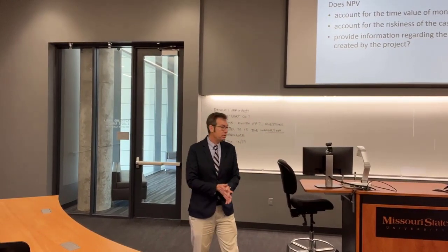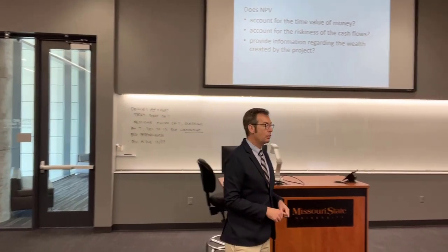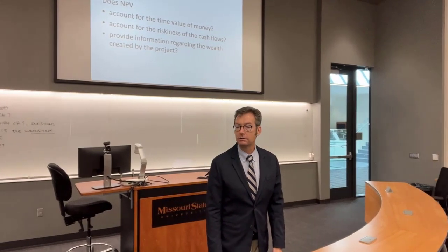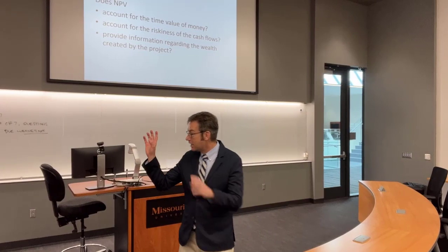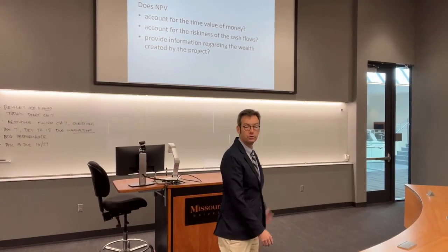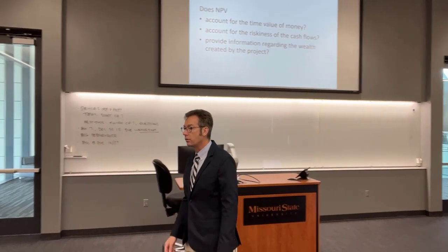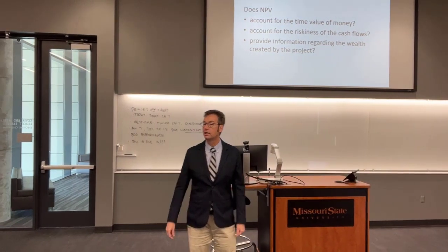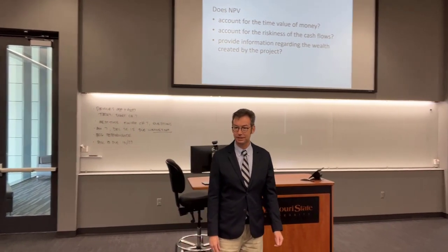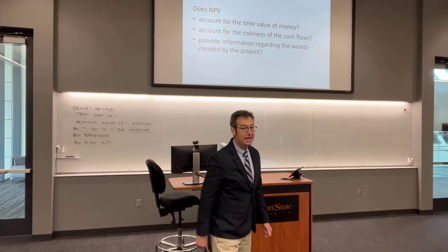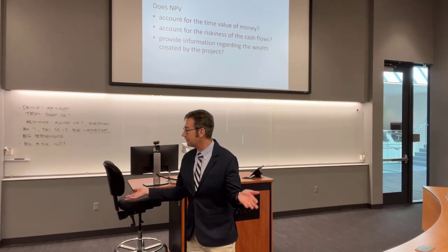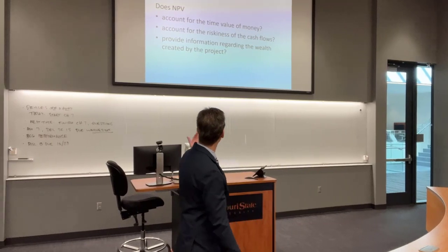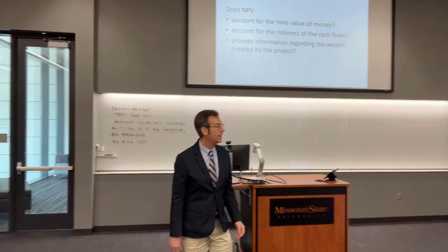Let's run the NPV rule over our three questions. Number one: does it account for the time value of money? Yes — it's net present value; we're looking at the present value of those future cash flows. Number two: does it account for the riskiness of the cash flows? Yes, because of the discount rate. Remember, Chapter 12 was all about finding the rate of return required based on risk — that's exactly what we're doing with the discount rate.